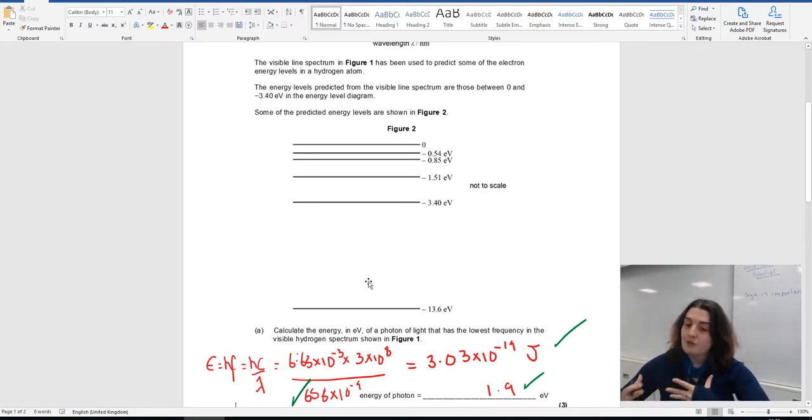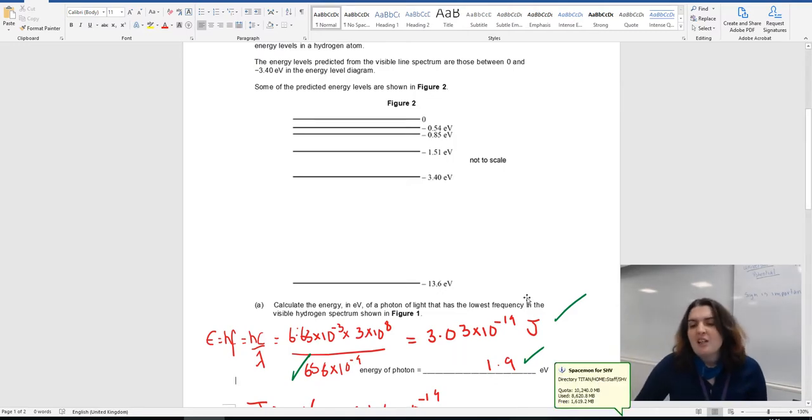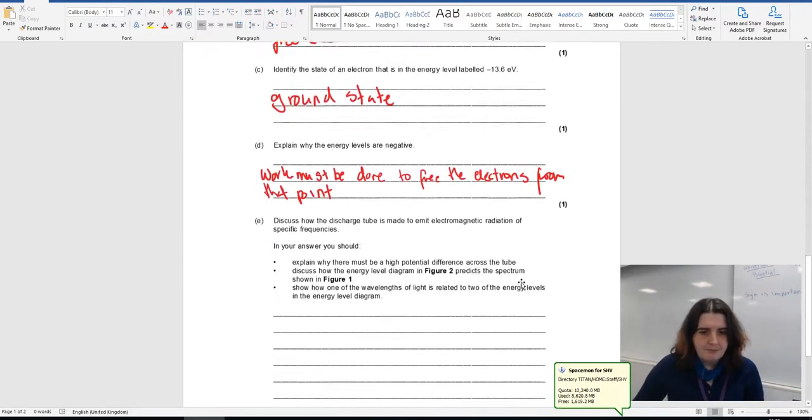So when you start doing electric fields in the second year, this makes a little bit more sense because the negative sign implies that energy must be given to the electron to take it out. Because all to do with electric fields are to do with looking at positive charges. If this was a positive charge, the field would kick it out. But in this case, because it's an electron trapped in something of a positive charge, you have to give it energy to get it out.